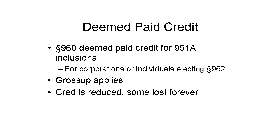951(A) inclusions are after-tax amounts. Foreign income taxes reduce the income subject to 951(A). Corporate shareholders of a CFC can get a deemed paid foreign tax credit for these taxes flowing with the 951(A) inclusion. This deemed paid credit is also available to individuals making a Section 962 election.